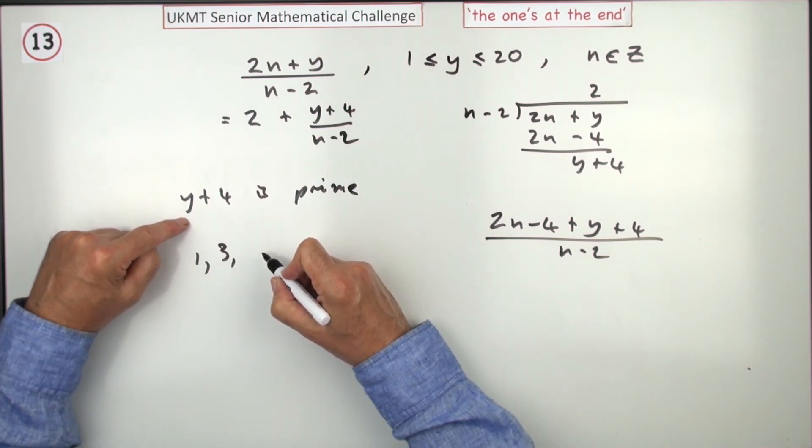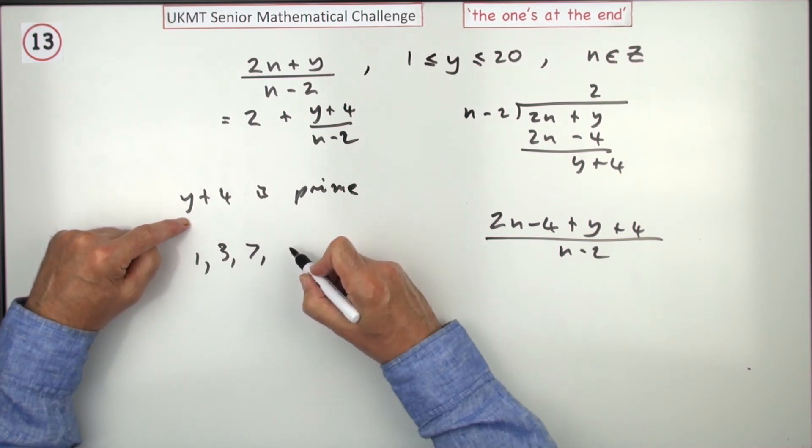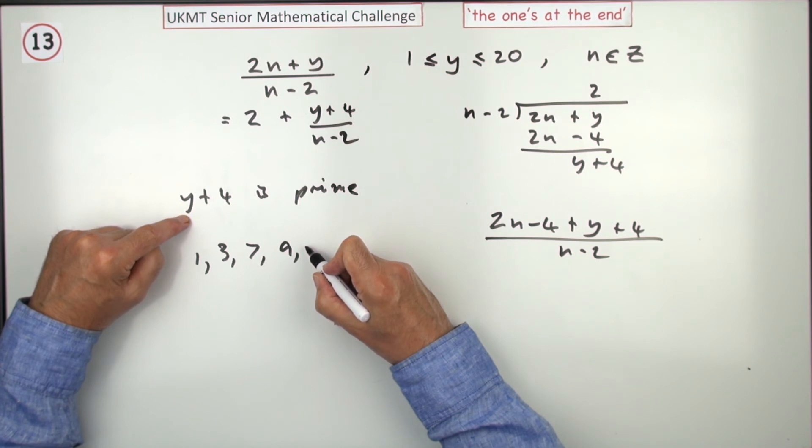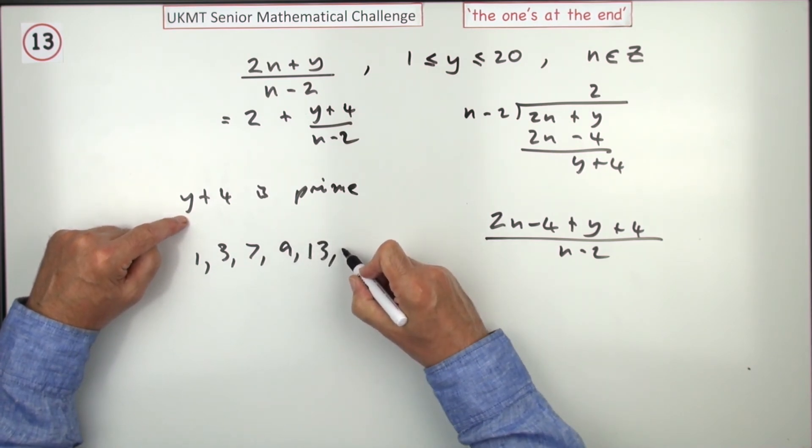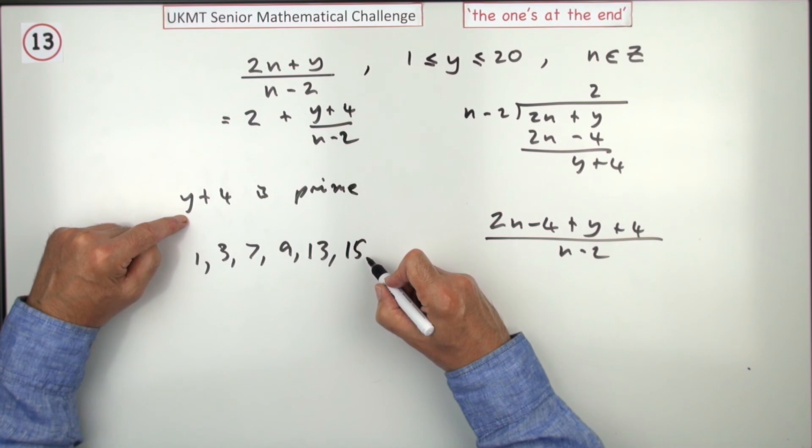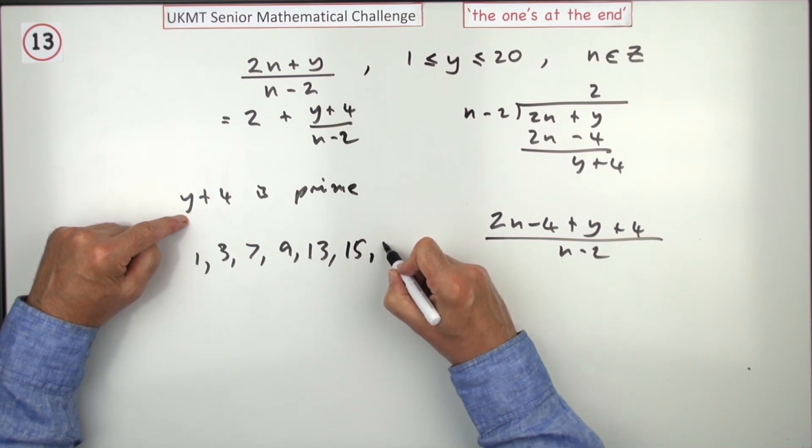5, that's no use, because it makes it a 9. 7, that's fine, because that makes it an 11. 9, that makes it a 13. 11 makes it a 15, that's no use. 13 makes it a 17, yep, that's fine. 15 makes it a 19, so that's fine. 19 makes it a 23, so that's also fine.